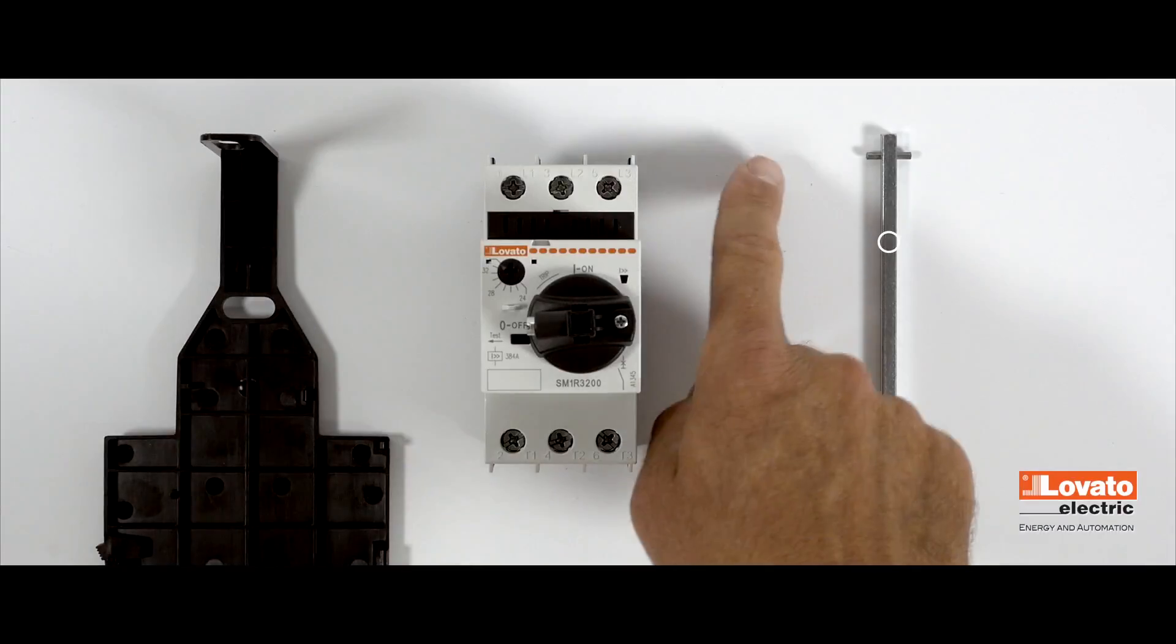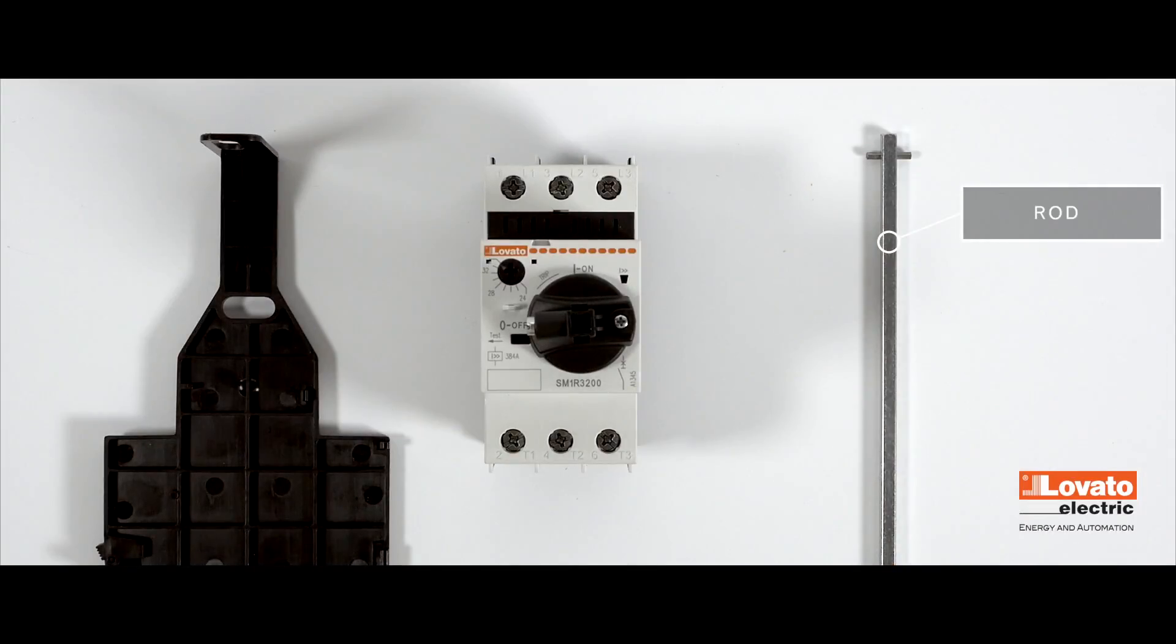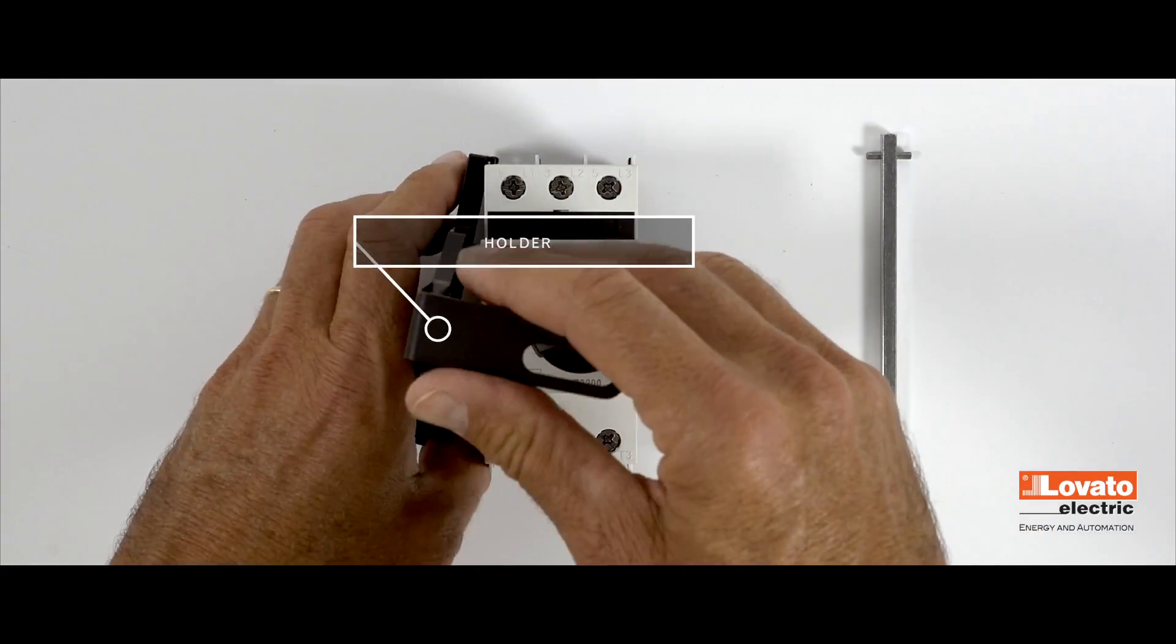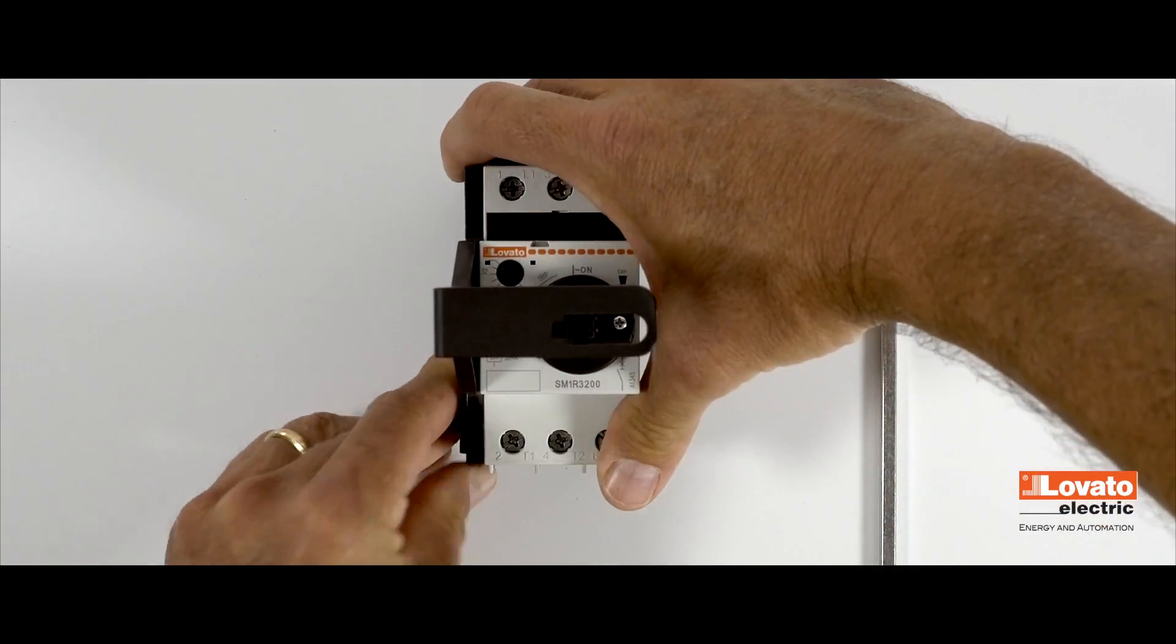For rods longer than 145 millimeters, we recommend using the specific holder. Clip it to the side—it will keep the rod perfectly horizontal.